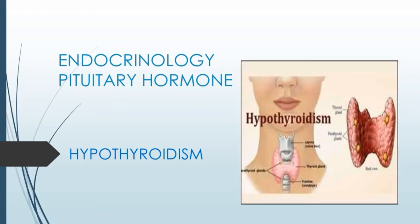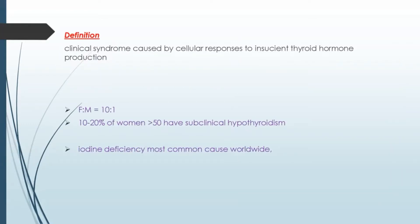Endocrinology: pituitary hormone. Hypothyroidism. Definition of hypothyroidism: it is a clinical syndrome characterized by cellular response to insufficient thyroid hormone production.